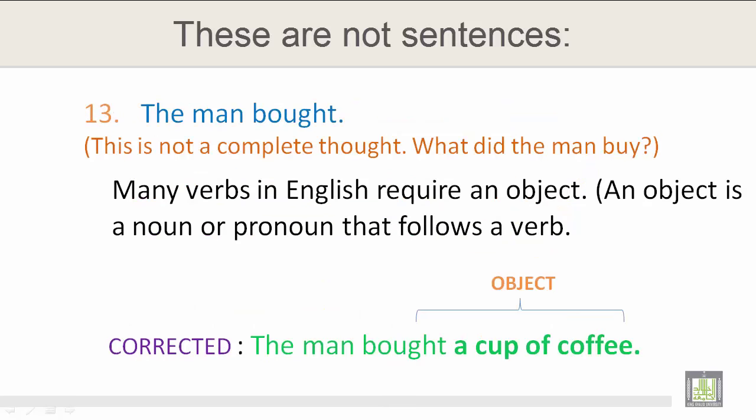Number 13: The man bought. This is not a complete thought. What did the man buy? Many verbs in English require an object. An object is a noun or pronoun that follows a verb. The corrected version of number 13 is: the man bought a cup of coffee. A cup of coffee is the object.